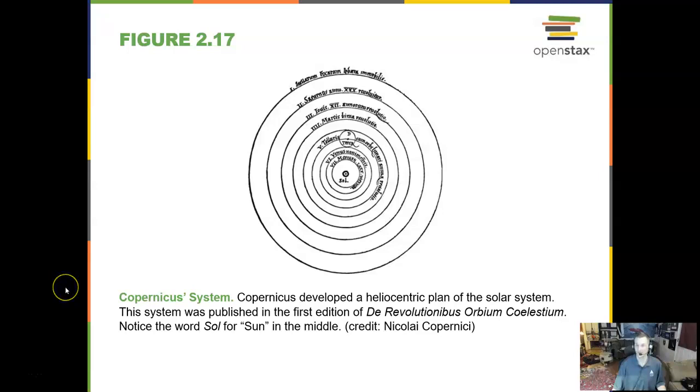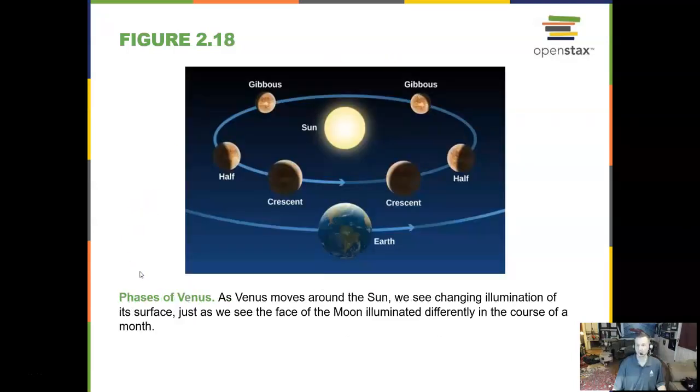So in Copernicus' system, the Sun is at the middle and everything orbits around that Sun. We can also see the phases of Venus. Venus does go through phases. But it's not quite the same as what the Moon goes through, but it's similar. And we can see this by looking at Venus in a telescope in the night sky or the early morning or early evening hours. And you can see a little bit or a lot lit up, depending on what phase it's in.